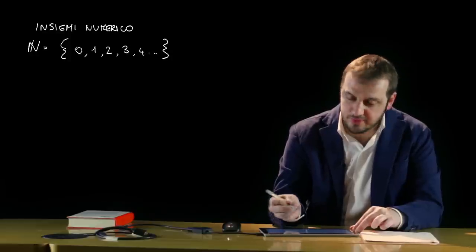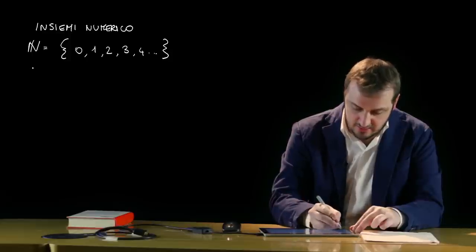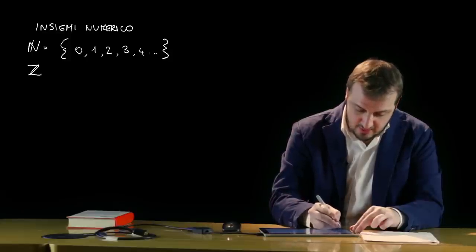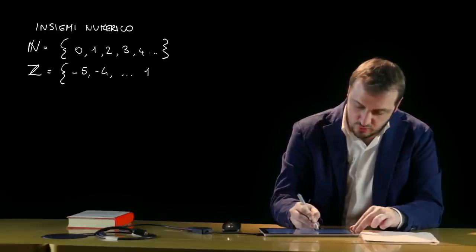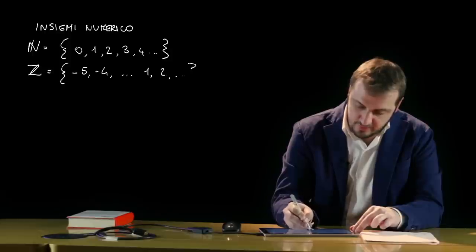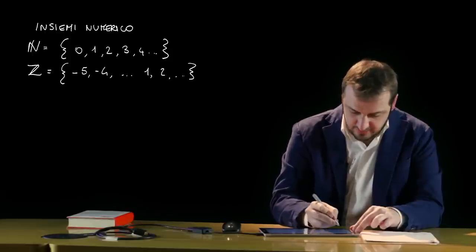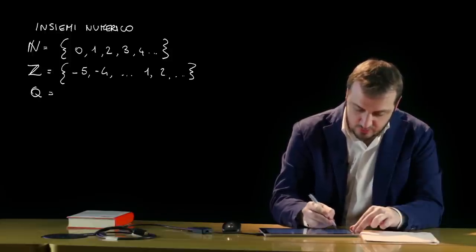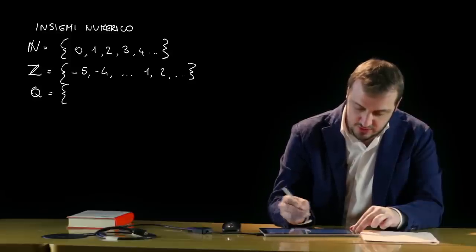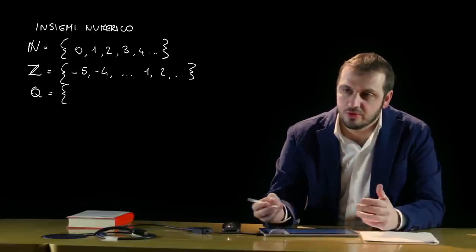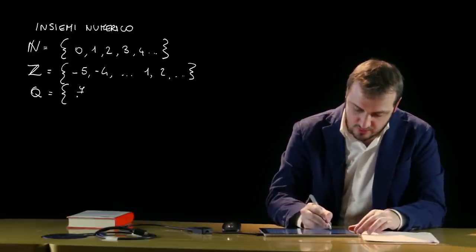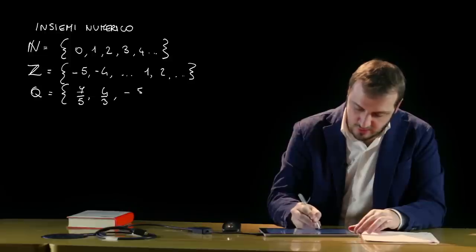Un insieme più ampio è quello dei numeri interi, che comprende anche i numeri interi negativi — quindi per esempio -5, -4, 1, 2 e così via. L'insieme dei numeri razionali, molto importante, è costituito da quei numeri che possono essere rappresentati come rapporto fra numeri interi: per esempio 7/5, 4/3, ma anche -5/4 e così via.